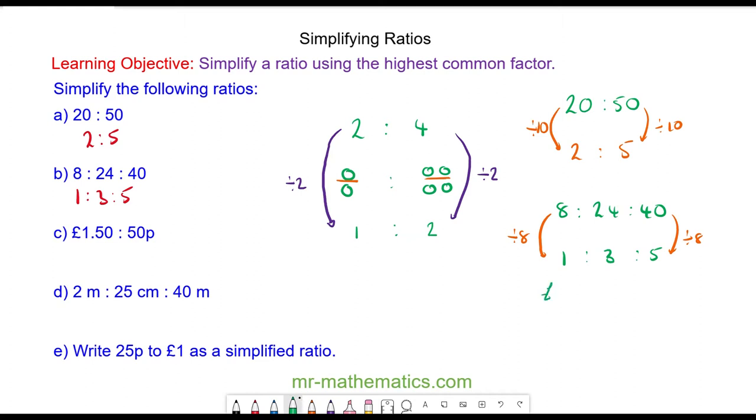For question C, we have £1.50 to 50 pence. Before we can simplify this, we need to write them both with the same unit. So I'm going to write £1.50 in pence, which is 150 to 50. The highest common factor of both numbers is 50. 150 divided by 50 is 3, and 50 divided by itself is 1, so the simplified ratio is 3 to 1.